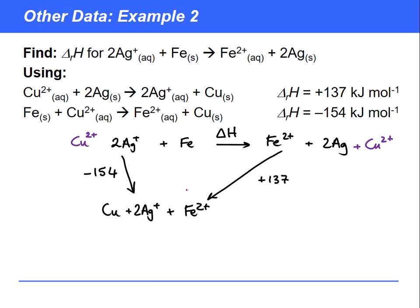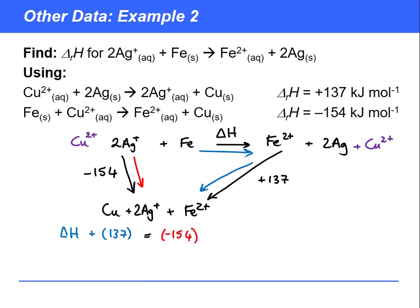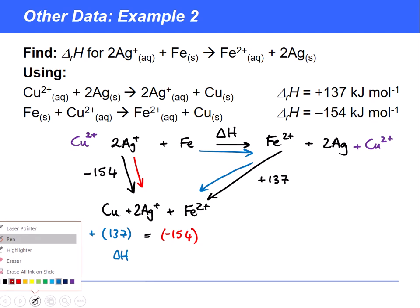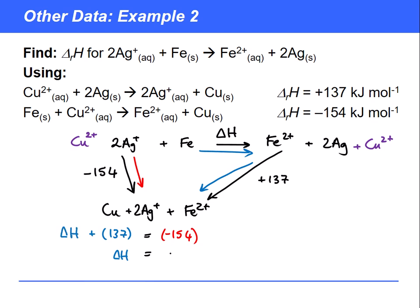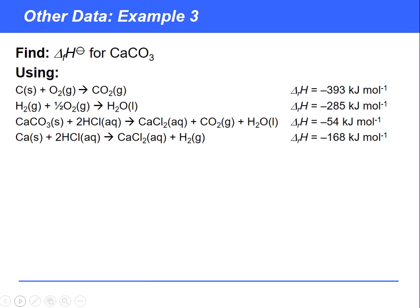All that remains is to find our two routes. The arrows are born here and all end there, so we can either go a direct route or take a detour along an indirect route. Hess's law tells us the energy change overall for those two routes should be the same. So ΔH + 137 = -154, which gives ΔH = -291 kJ/mol.